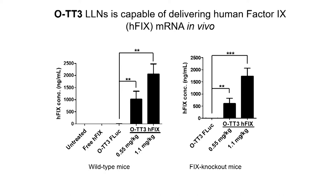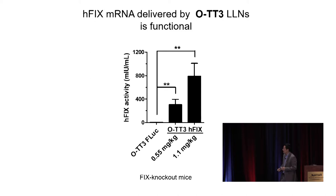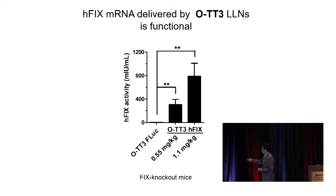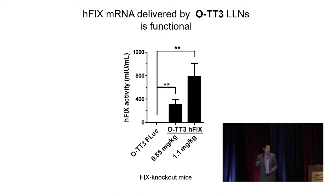We then asked whether the recovered proteins are active. Using an activity assay — y-axis in mIU/mL — it showed dose-dependent recovery of factor IX activity. In normal humans, factor IX activity is between 500 to 1500 mIU/mL. At a dose of 1.1 mg/kg, the activity reached approximately 800 mIU/mL, meaning this nanoparticle was able to fully recover factor IX activity into the normal physiological range in factor IX knockout mice.